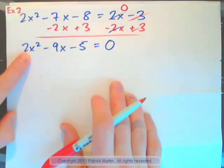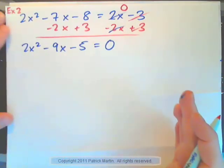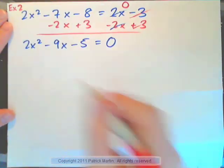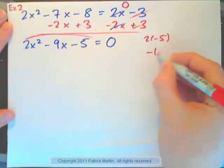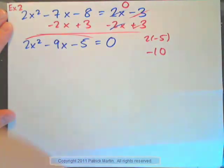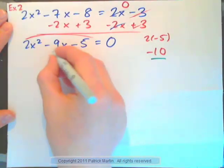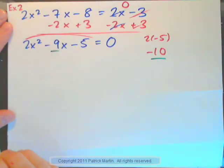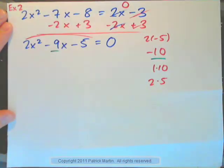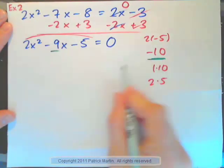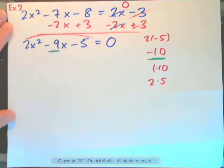So that's the first step taken care of. I have zero on the right. Now factor the left-hand side. Coefficient of x squared is 2. So do I need the short method or the long method? Long method. 2 times negative 5, negative 10. Now find two numbers that multiply to negative 10 and add to negative 9. List the pairs of factors of 10: 1 times 10, 2 times 5.